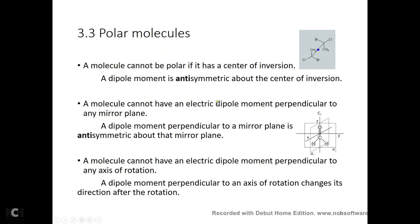A molecule cannot have an electric dipole moment perpendicular to any mirror plane. So if you look at CH2O — formaldehyde — does this molecule have a dipole moment? Yes, of course, along the Z direction. But it cannot have an electric dipole moment perpendicular to any mirror plane. There are two mirror planes here, and neither is perpendicular to the dipole moment.